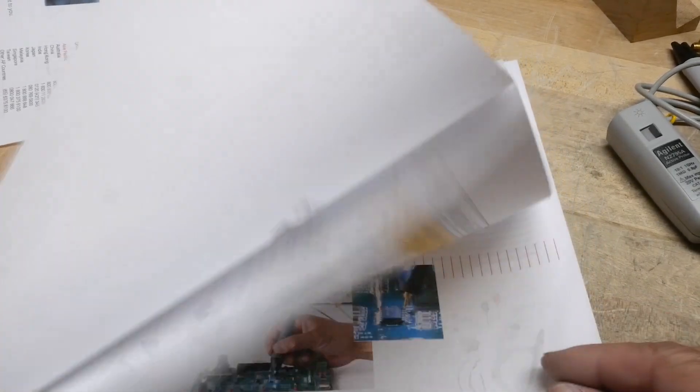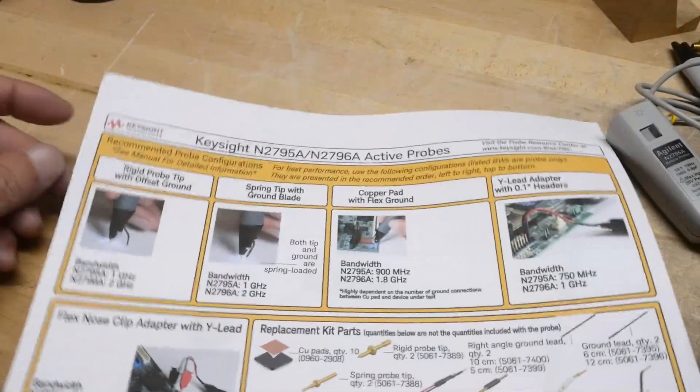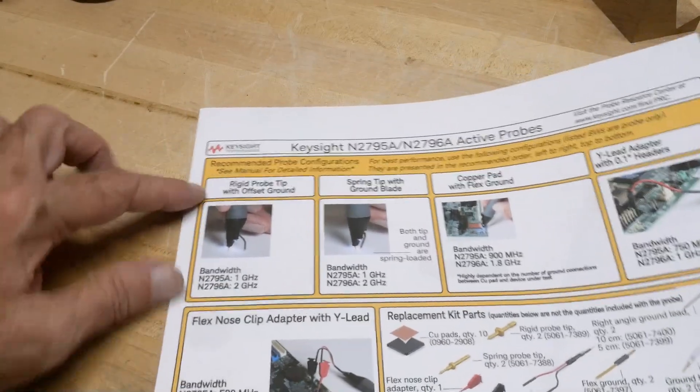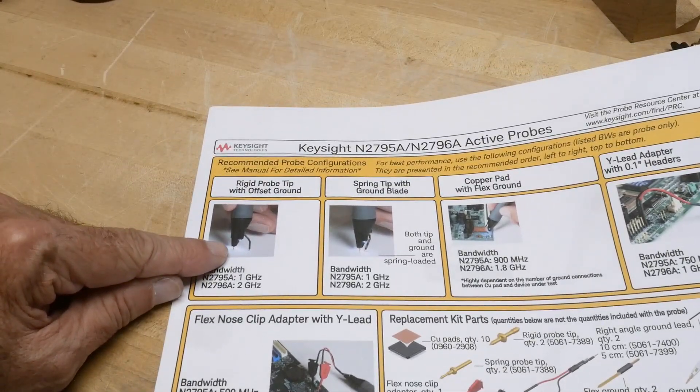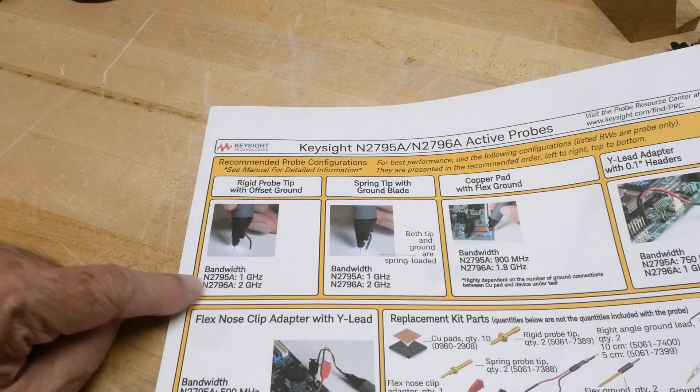All right, you can find all the stuff on Keysight's website. Here's some nice pictures. So if you use a rigid probe with a ground lead, you're getting the maximum bandwidth.